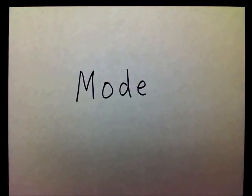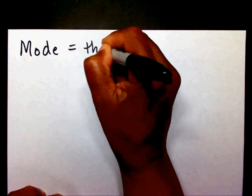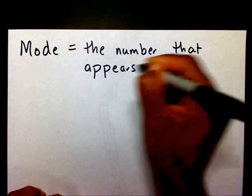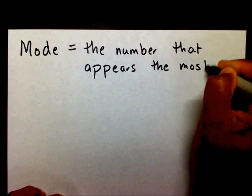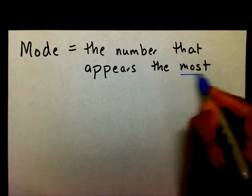Today we're going to be talking about one of our measures of central tendency, which is the mode. So let's get started. The mode is the number that appears the most. Most teachers like to say 'most' in 'mode.'